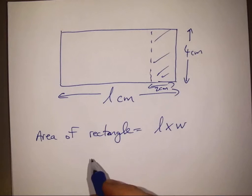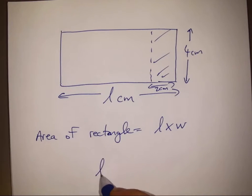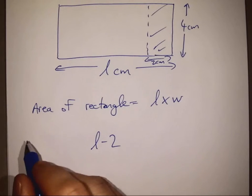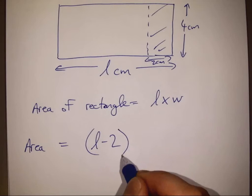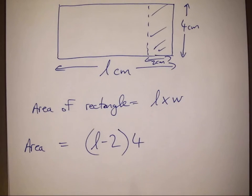So it's going to be, the length, the new length then is going to be L minus 2, so our area will be given by L minus 2 multiplied by 4.